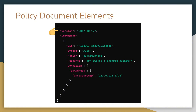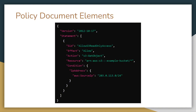Next, you have a statement property, which is an array of statement objects. In the statement object, you have an SID — a unique identifier for the statement, in this case 'AllowS3ReadOnlyAccess'. The effect property specifies whether access is allowed or denied; in our case it's 'Allow'. The action property specifies 'S3:GetObject', granting the get object action on S3. The resource property defines the example bucket with an asterisk granting access to everything in it. You can also have a condition, which in our case limits access to requests originating from a specific IP range.